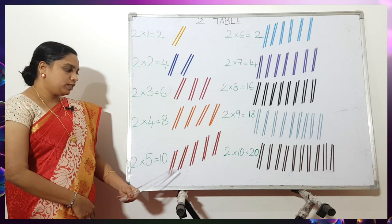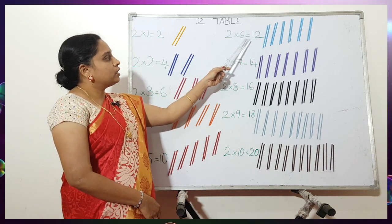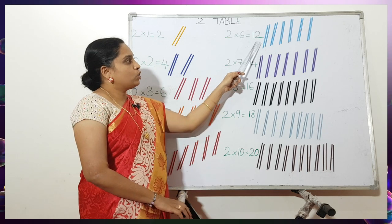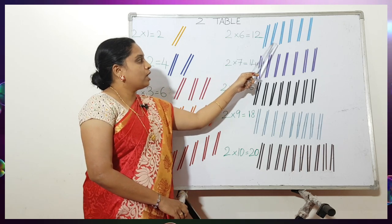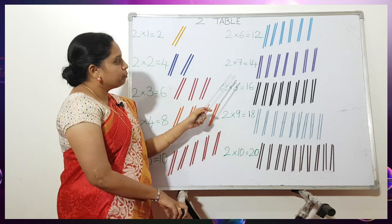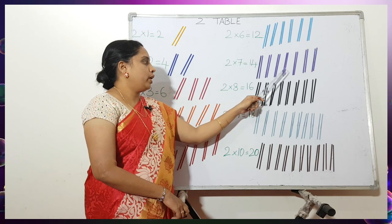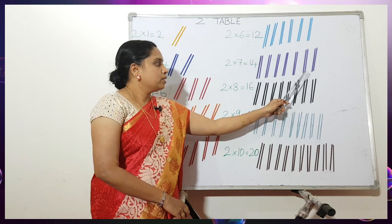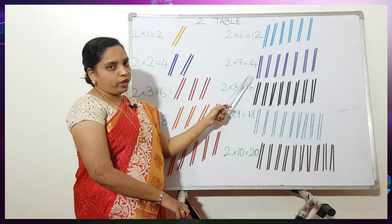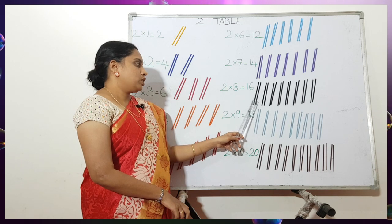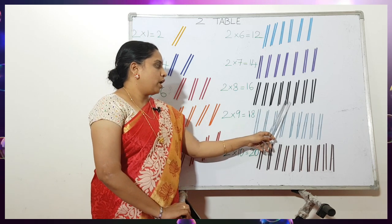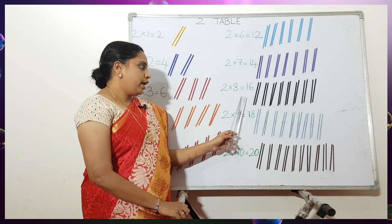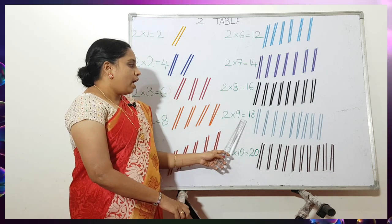Then the next one: 6 times — 1, 2, 3, 4, 5, 6 — 6 times 2 is 12. Then 7 times — 1, 2, 3, 4, 5, 6, 7 — 7 times 2 is 14. 8 times 2 is 16.